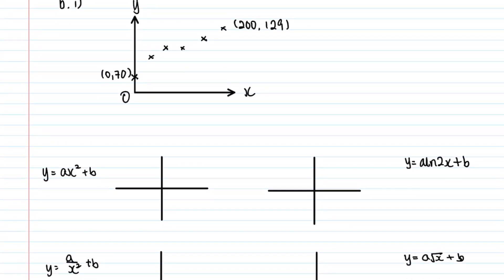Case A: y equals ax squared plus b is a quadratic graph. Because of the x squared term, it's a parabola. With the scaling by a and vertical translation by b, the graph moves upward — it still looks like a U-shape, which does not match our scatter diagram.